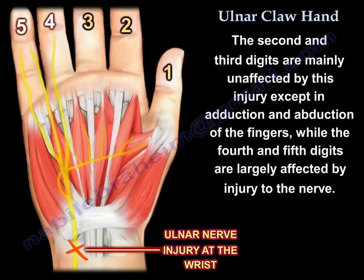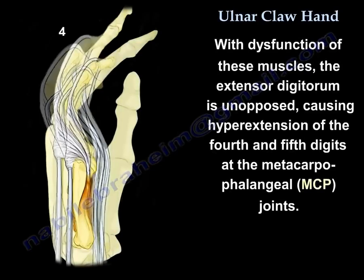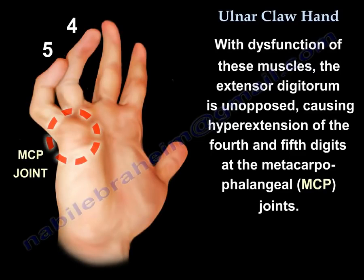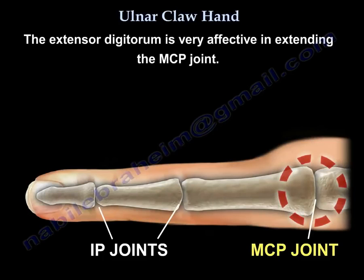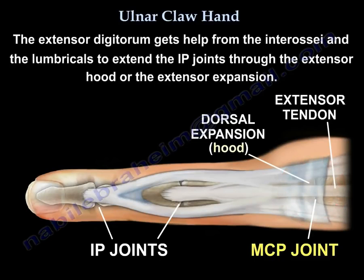The second and third digits are mainly unaffected by this injury except in adduction and abduction of the fingers, while the fourth and fifth digits are largely affected. With dysfunction of these muscles, the extensor digitorum is unopposed, causing hyperextension of the fourth and fifth digits at the MCP joints. The extensor digitorum is very effective in extending the MCP joint, and it gets help from the interossei and lumbricals to extend the IP joints through the extensor hood or extensor expansion.